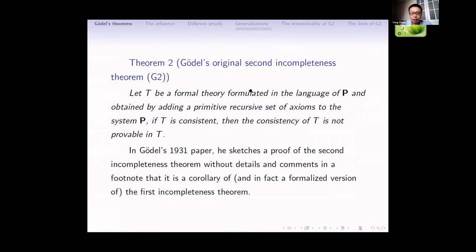This is Gödel's original second incompleteness theorem. Let T be a formal system in the same language as P, and a primitive recursive extension of P. If T is consistent, then the consistency of T is not provable in T. In Gödel's 1931 paper, he sketched a proof of the second incompleteness theorem without details, and he commented that G2 is a corollary of G1 — in fact, it is a formalized version of G1.